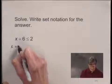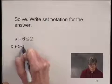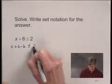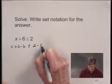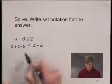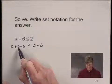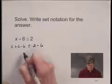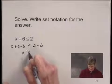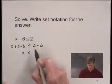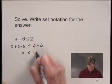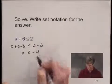So we write x plus 6 minus 6 is less than or equal to 2 minus 6. On the left-hand side, 6 minus 6 is 0, so I have x plus 0, or just x. And on the right-hand side, I have 2 minus 6, which is negative 4.